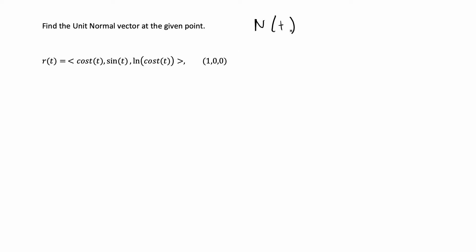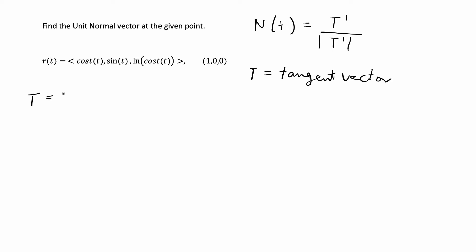The unit normal vector N(t) is equal to T' over the magnitude of T', where T is the tangent vector. The tangent vector T has its own formula: T = r' over the magnitude of r', where r refers to the given vector function. First we have to solve for T, and then we'll plug in T' and the magnitude of T' to get our final solution.